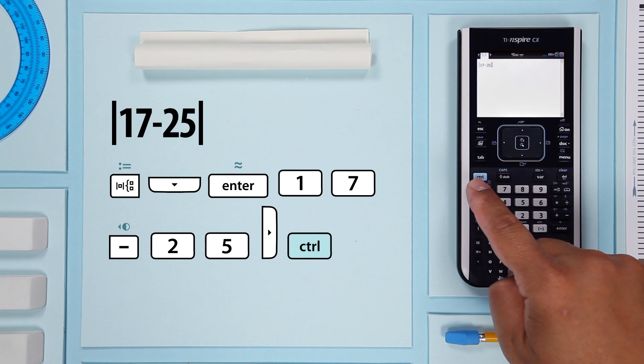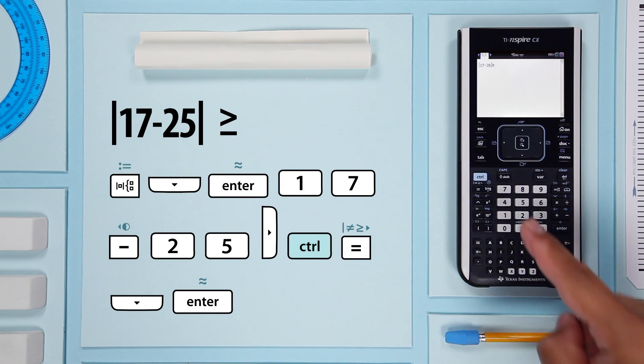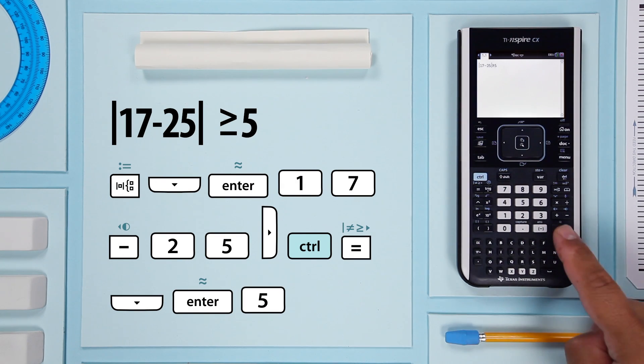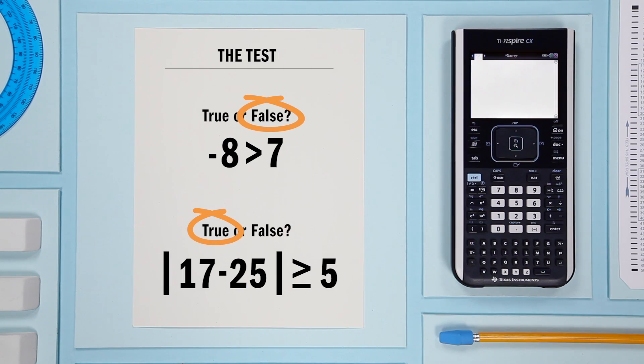control and equals. Remember, that opens a menu where you can select the greater than or equal to sign. Then finish the statement and press enter. The result is true. The absolute value of 17 minus 25 is greater than or equal to 5.